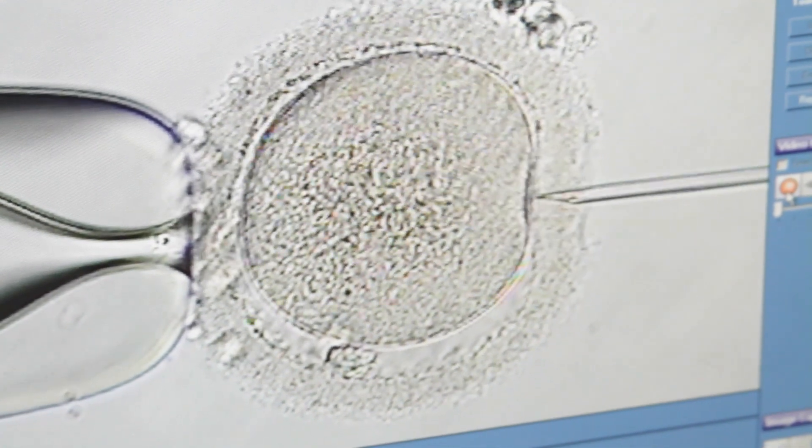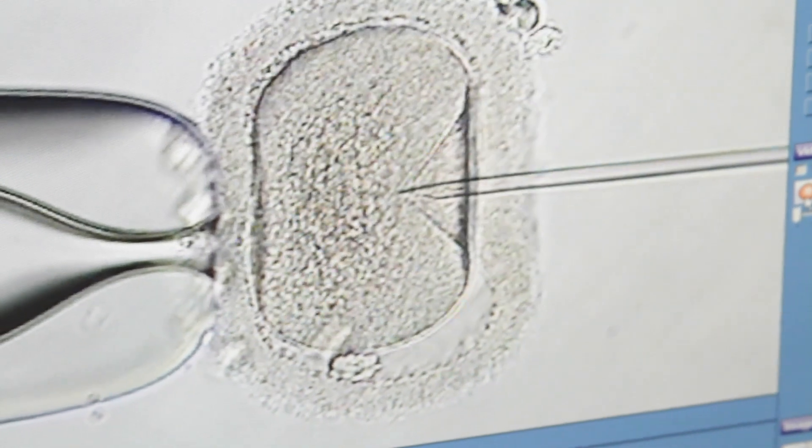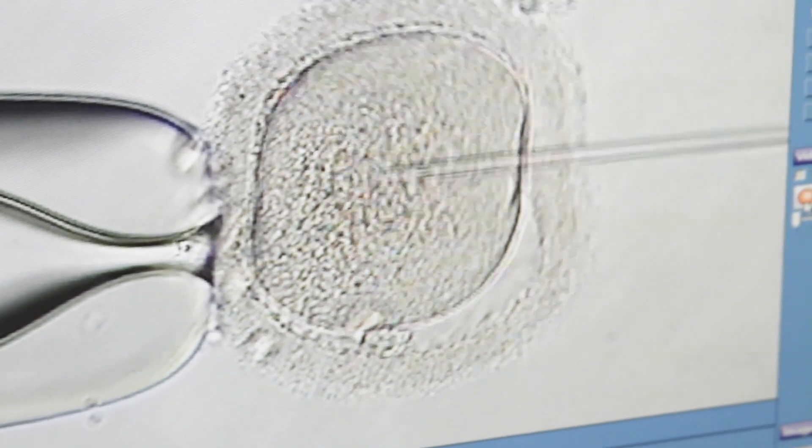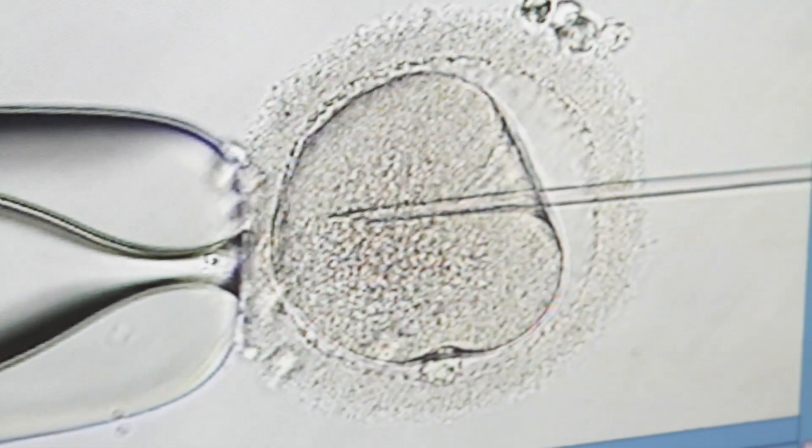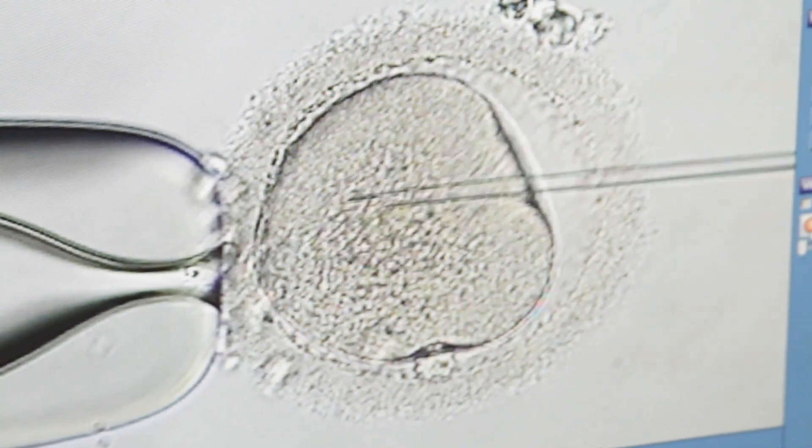You can see with this shot how the micropipette is only just slightly larger than the sperm itself. It's approximately the same diameter as a single human hair, so it really is very tiny.